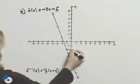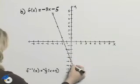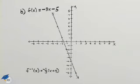So I'll go up 3, left 1, up 3, left 1 or down 3, right 1 to find points on that line.